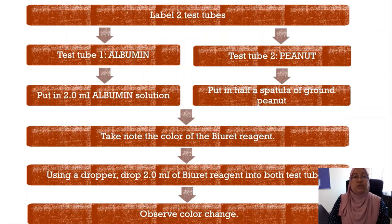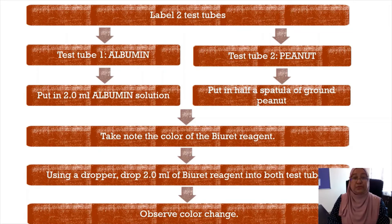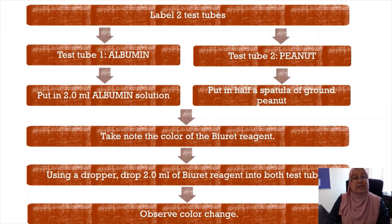Label two test tubes: test tube one for albumin, test tube two for peanut. In test tube one, put in 2 ml of albumin solution. In test tube two, put in half a spatula of ground peanut. Take note of the color of the Biuret reagent. Using a dropper, add 2 ml of Biuret reagent into both test tubes and observe any color changes.